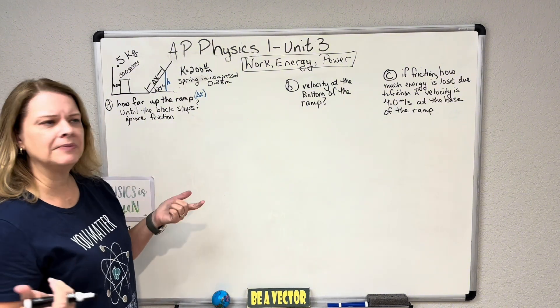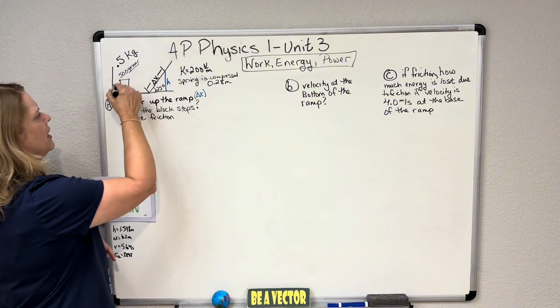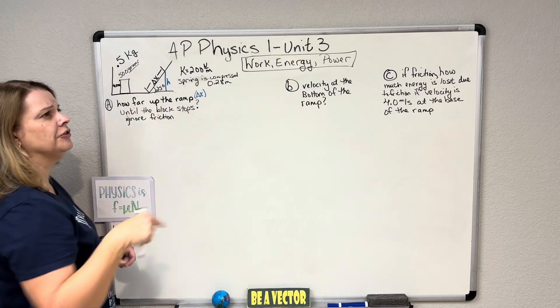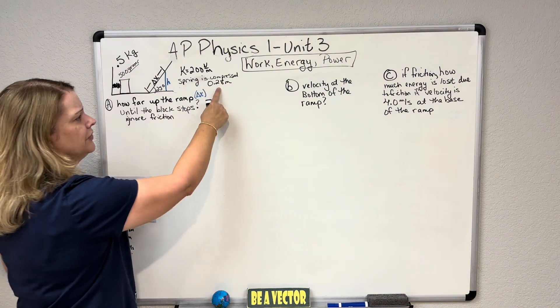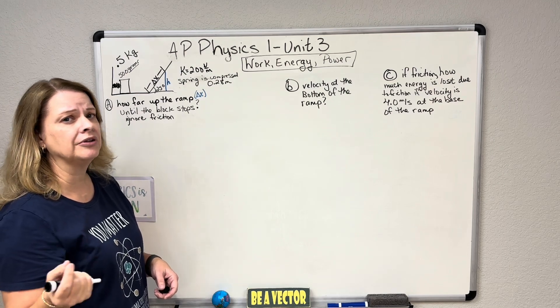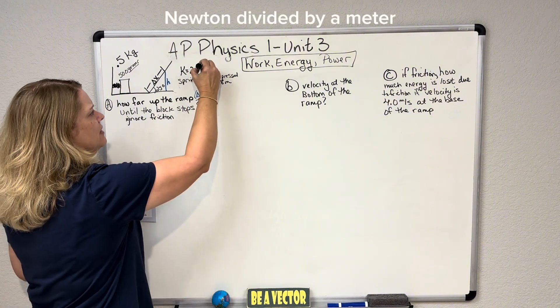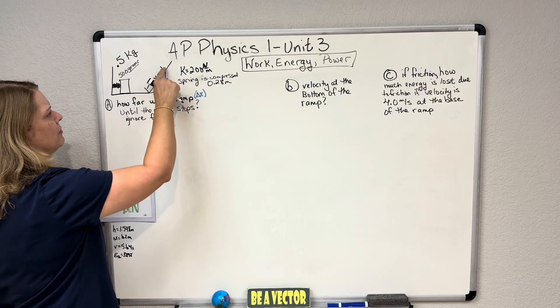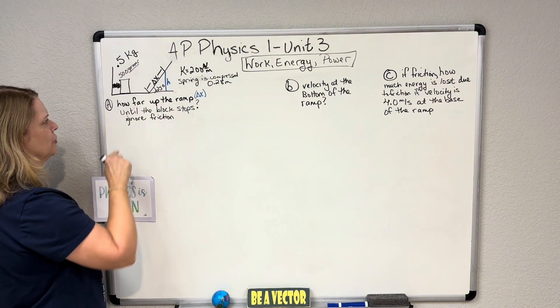There's three questions. We're just going to worry about the first one. It says, how far up the ramp until the block stops? Ignore friction. I have a block here, it's 500 grams. First thing I'm going to do is switch that to kilograms because we must be in kilograms. It's equal to 0.5 kilograms. We have a spring that is compressed 0.28 meters, and this might be in centimeters. Watch that. A lot of times on spring compressions, they'll be in centimeters. You need to get that to meters. My K value, my spring constant is 200 Newton per meter. They want to know how far up the ramp, specifically that delta X, the hypotenuse. That's an angle of 25 degrees.